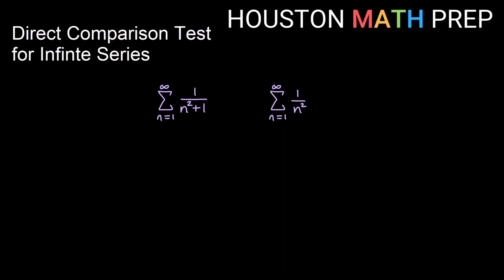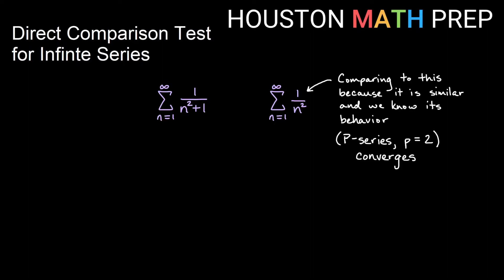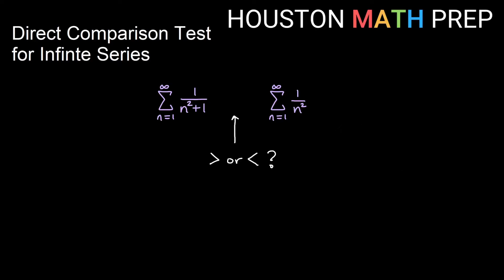First I want to look at the 1 over n² + 1 series and compare it to 1 over n². We'll make this comparison because we know that the series 1 over n² is a p-series with p = 2, and since p is greater than 1, it converges — we know that from our p-series test video. What we'll try to decide next is which of these is larger than the other one, looking at the partial sums and how they grow.